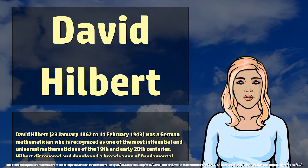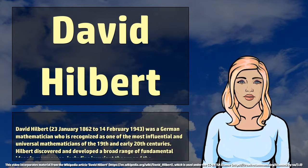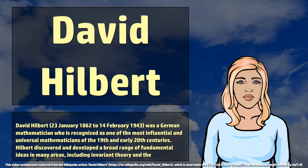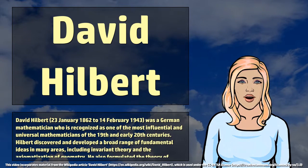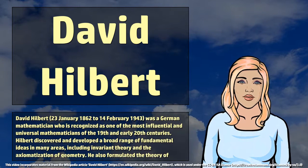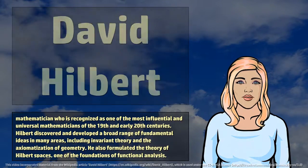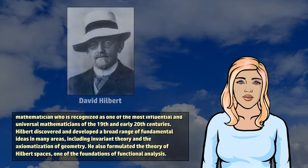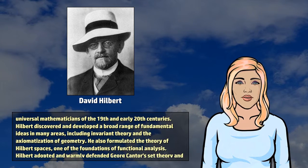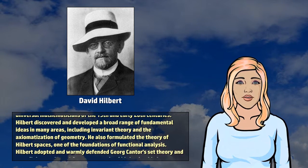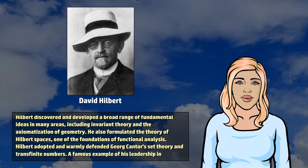David Hilbert, January 23, 1862 to February 14, 1943, was a German mathematician who was recognized as one of the most influential and universal mathematicians of the 19th and early 20th centuries. Hilbert discovered and developed a broad range of fundamental ideas in many areas, including invariant theory and the axiomatization of geometry.